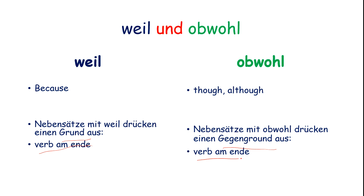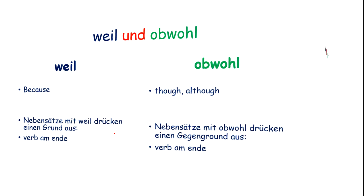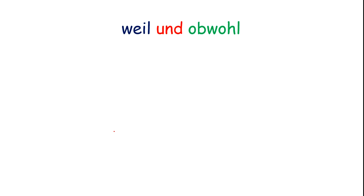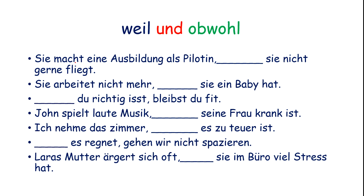Verb at the end — same rule for both. Now we choose weil oder obwohl in this sentence: Sie macht eine Ausbildung als Pilotin, dash, sie nicht gerne fliegt. Pilotin nicht — normally a pilot flies. Then we use obwohl.